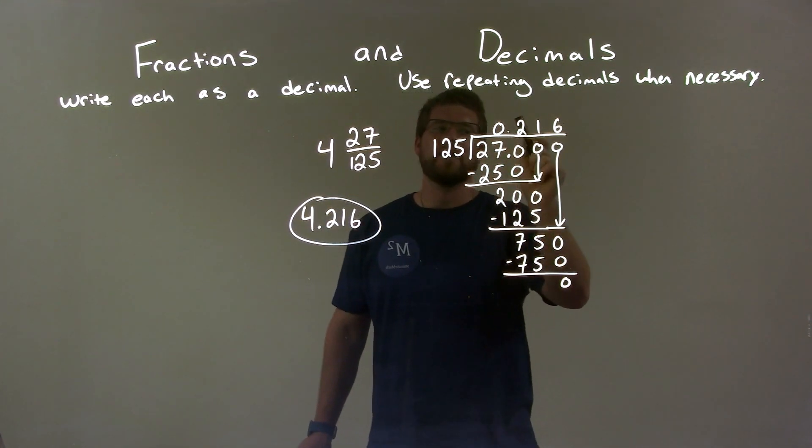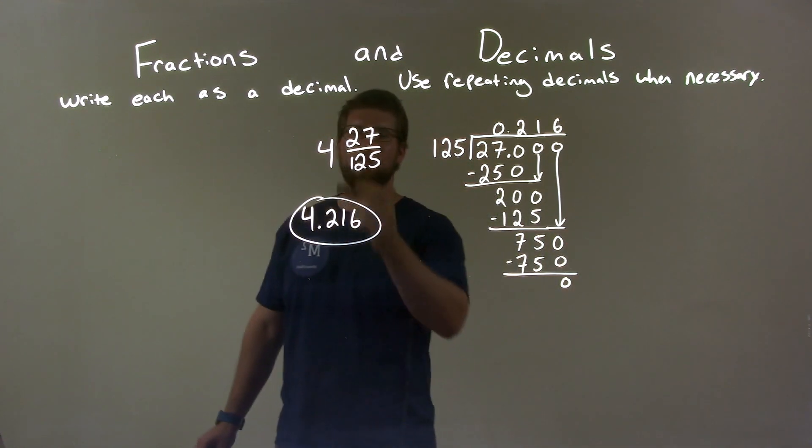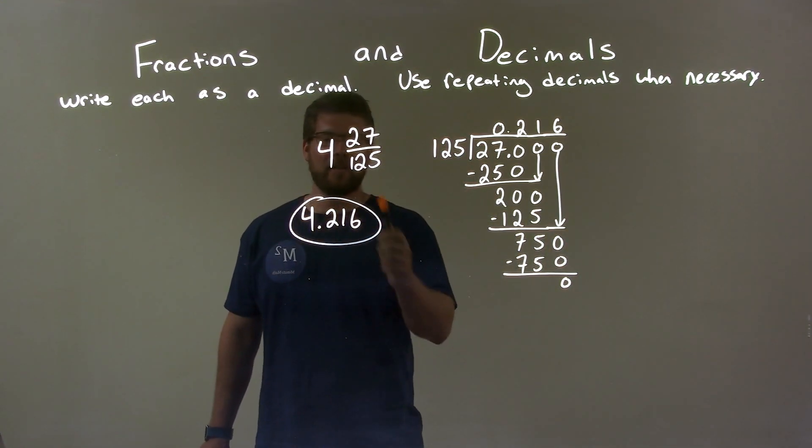I ended up getting 0.216. Well, the 0.216 is the decimal part. We combine that with the 4, the whole number part, and that gives our final decimal answer of 4.216.